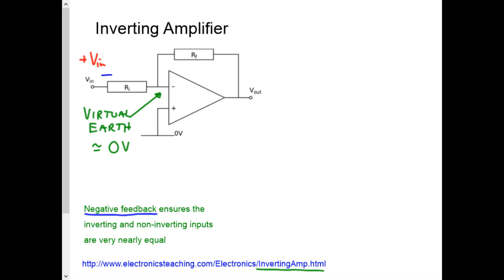Therefore, current's going to flow through this resistor, because it's flowing from the positive input voltage to this point here, which is at zero volts, or close enough. No current can flow into the input, so the current has to keep flowing through the output resistor, or the feedback resistor, and to the output.